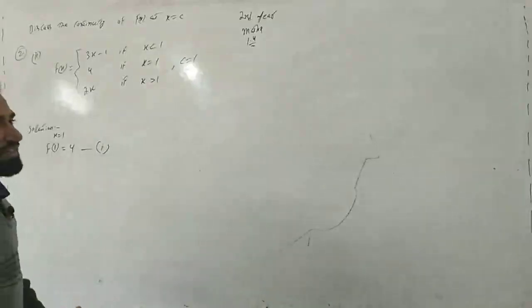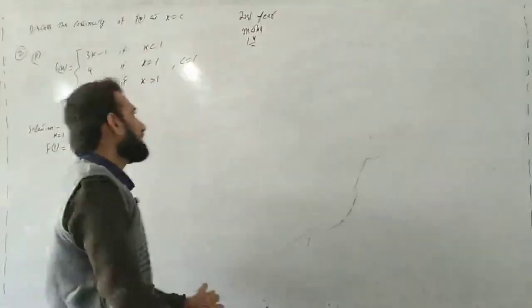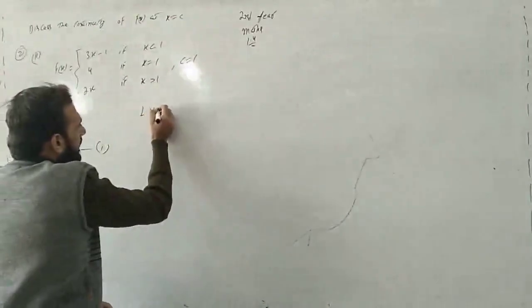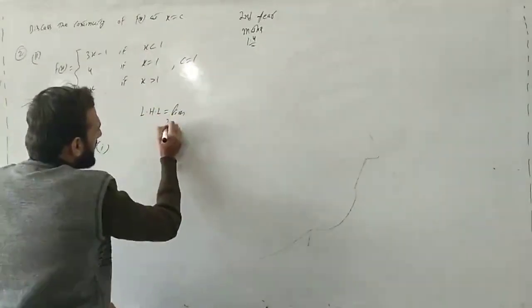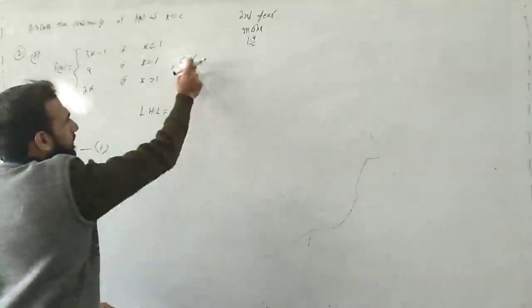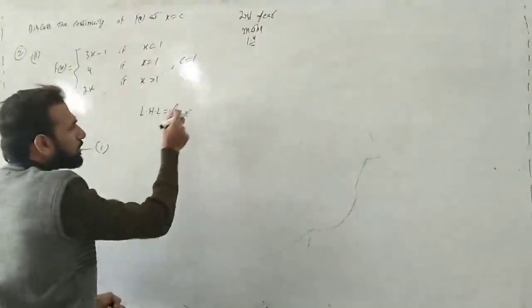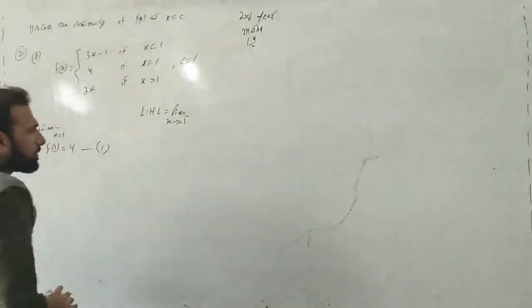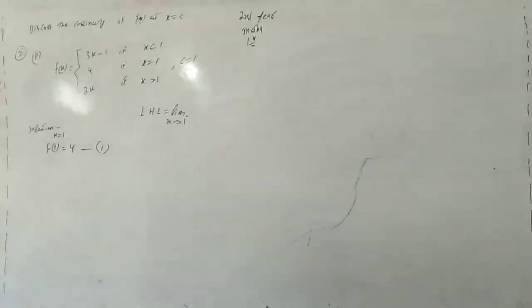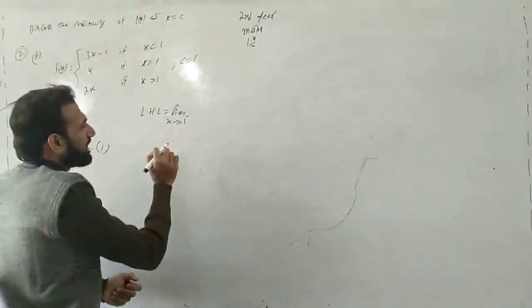Doosri condition: limit exist kare. Limit exist karne se murad left hand limit aur right hand limit dono equal hon. Pehle left hand limit find karte hain. Left hand limit: limit x approaches to 1 from the left — upar negative ka sign minus lagaate hain, jo represent karta hai limit approaches from left hand side.